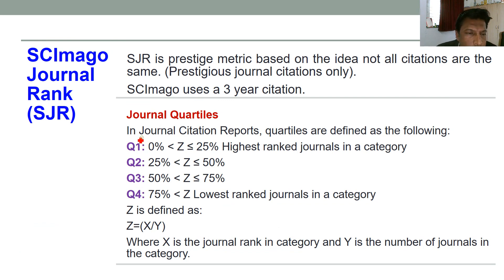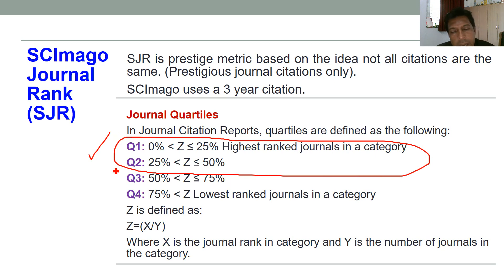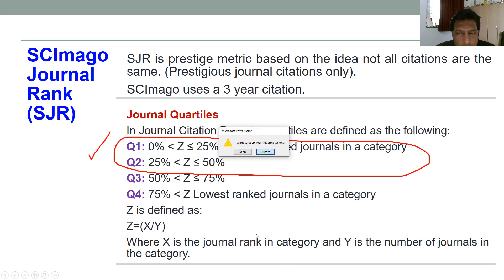So this is journal quartiles. Always try to publish your paper — whether you are a research scholar or a faculty of a good university — in Q1 or Q2 quartile journals, and also try to publish in high impact factor journals. I hope this information will be useful to you for your research career. Thank you very much.